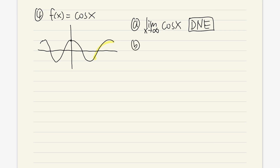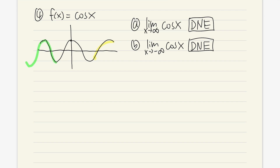On the other hand, if we have the limit as x approaching negative infinity of cosine x, you can expect the same behavior. We don't have a limit for this because if we go to the left — use your left index finger and trace along the curve — you can see the curve will also be going up and down. So there's also no limit for that; it doesn't exist.